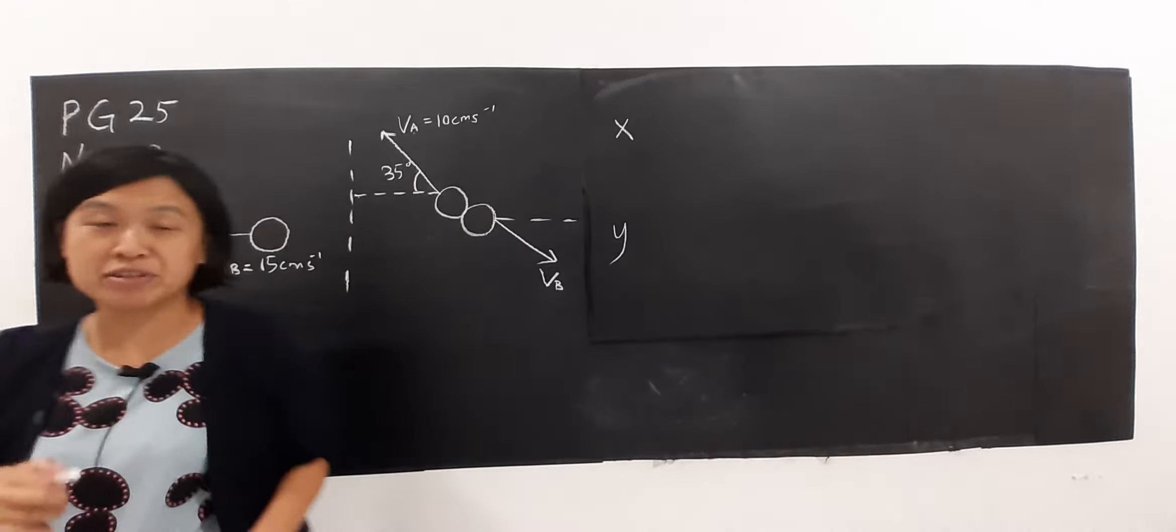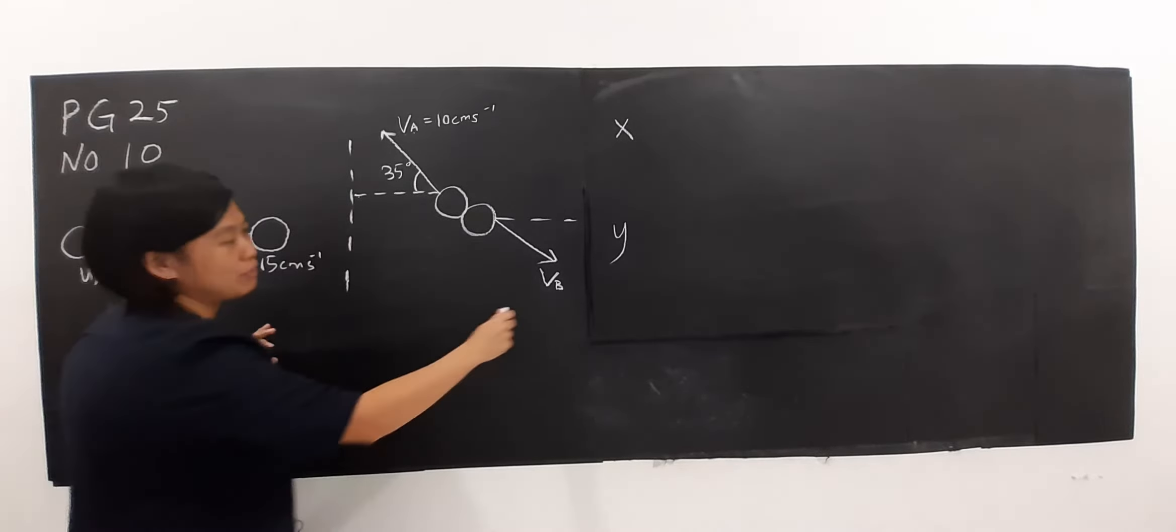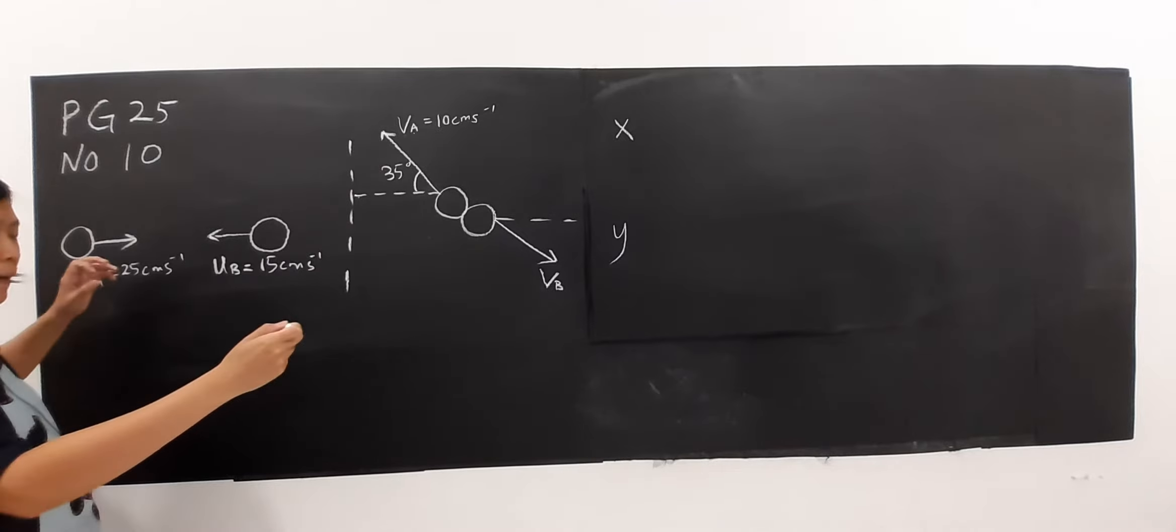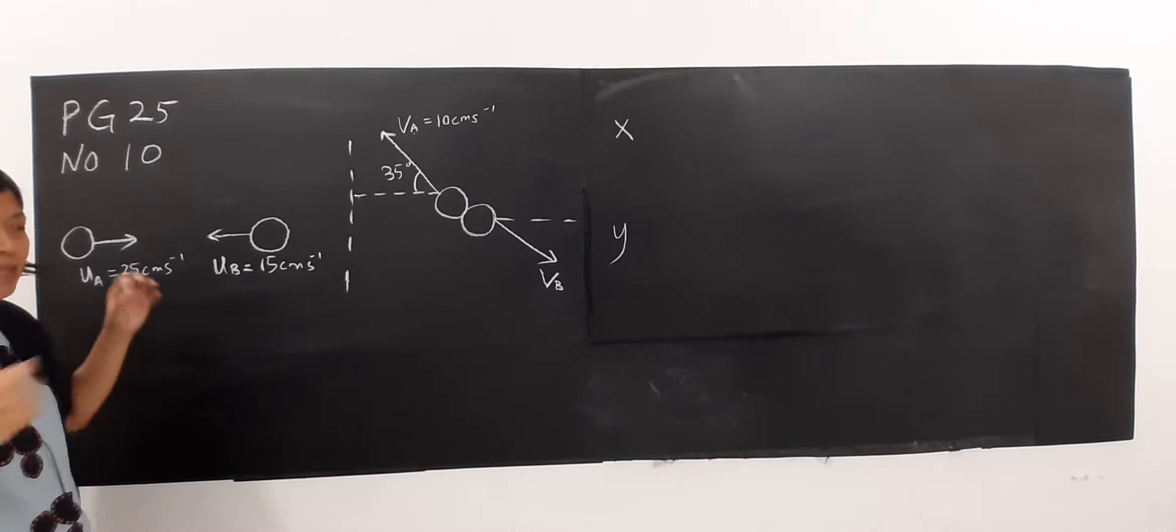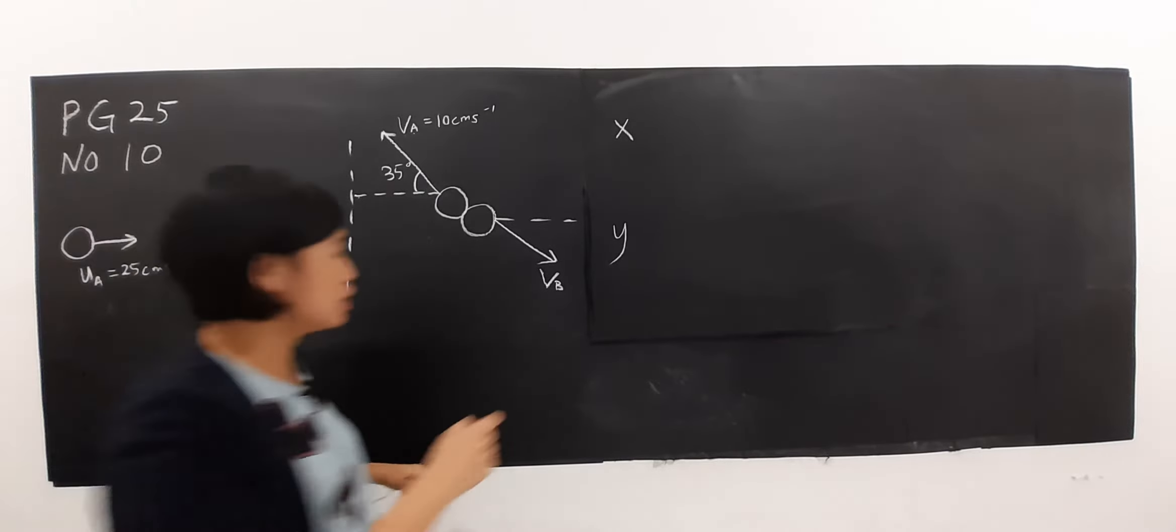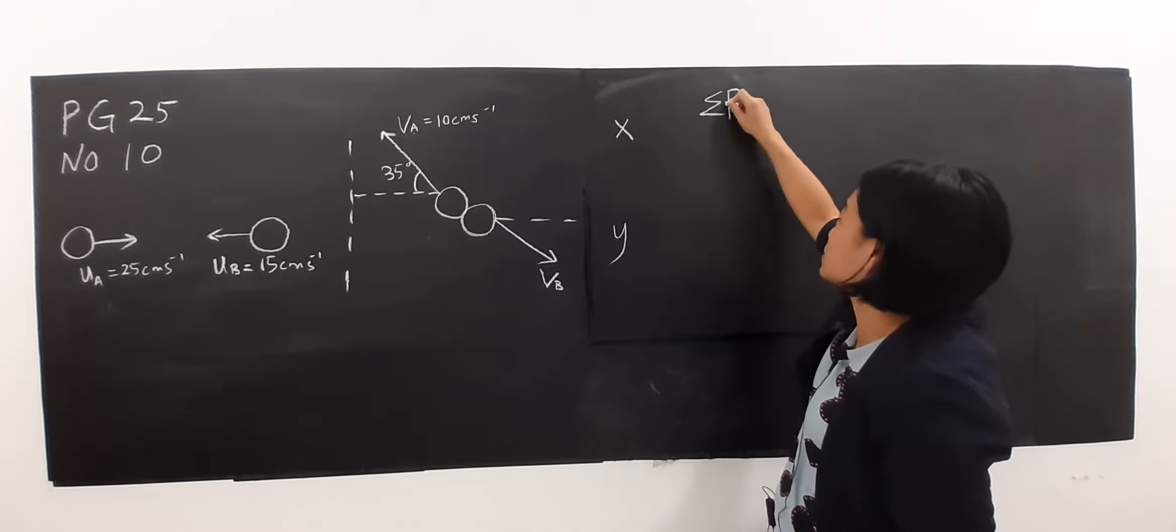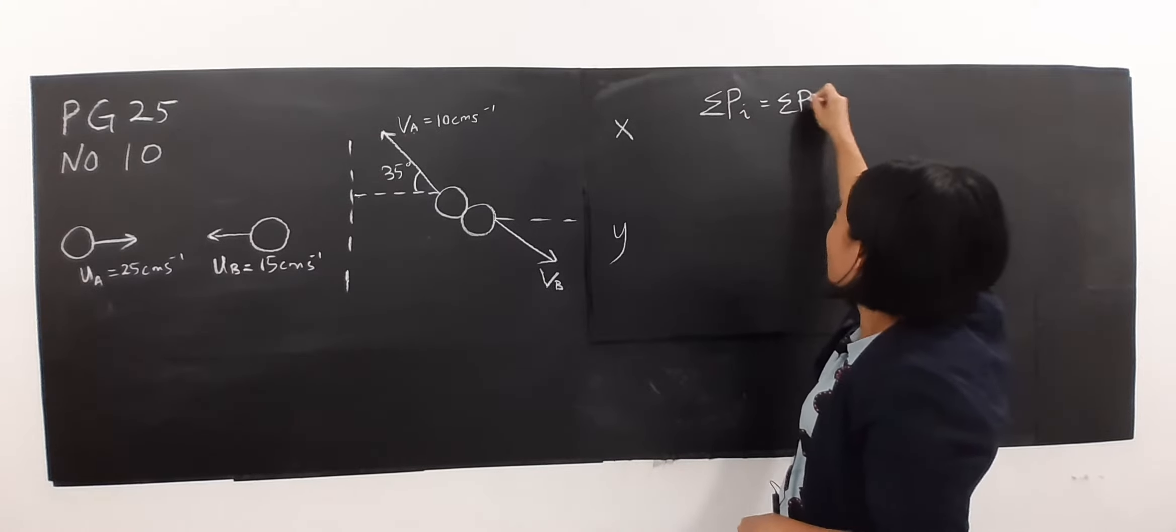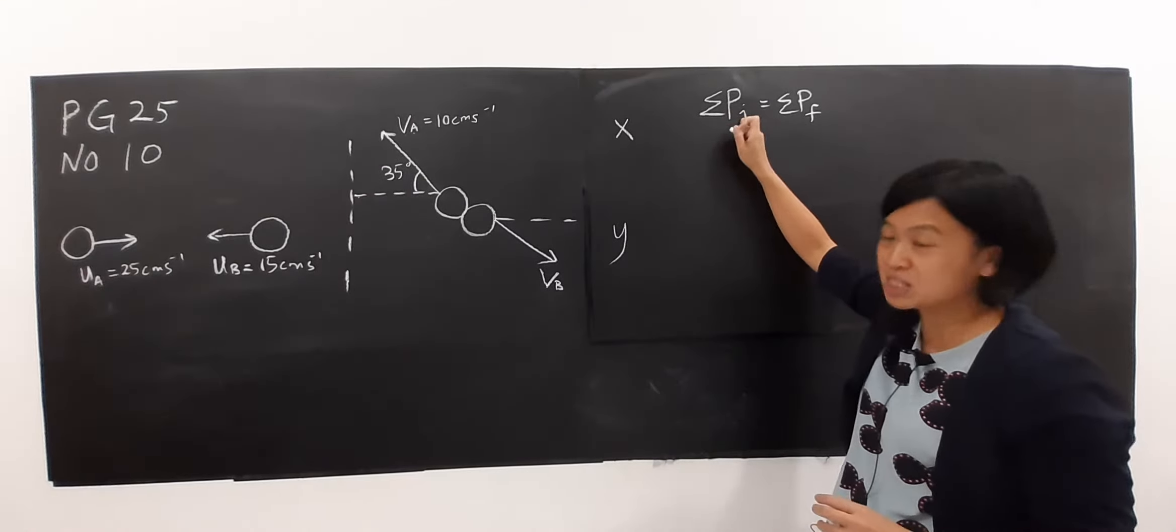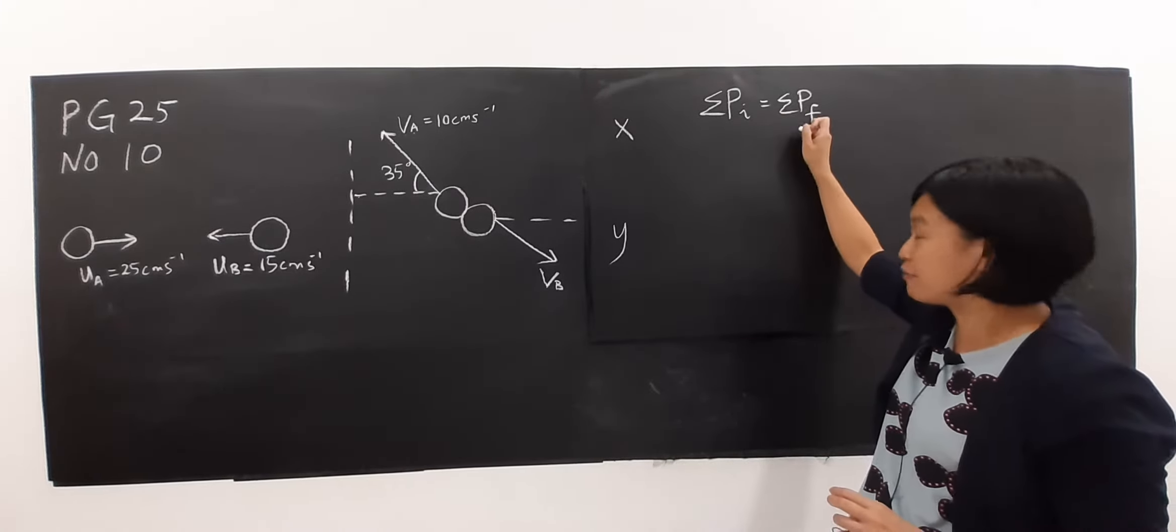I have already told you the concept that for problems where you have to find the value and direction of velocity, remember for all kinds of collision what should be conserved - the total momentum should be conserved. This means the total momentum before collision should be equal to the total momentum after the collision.